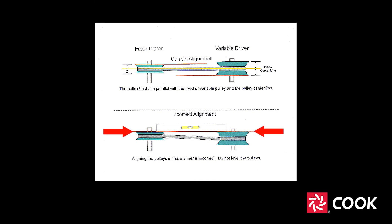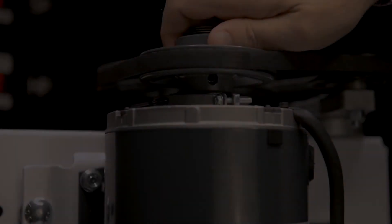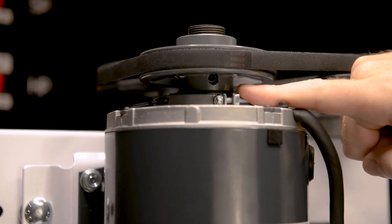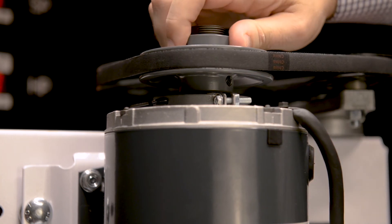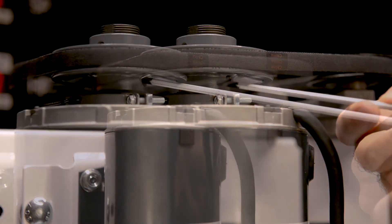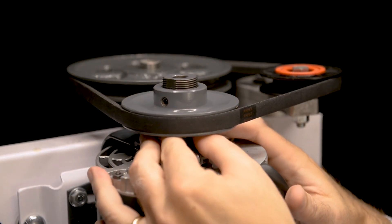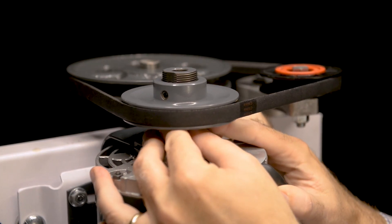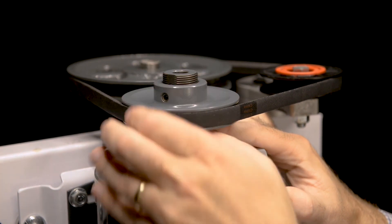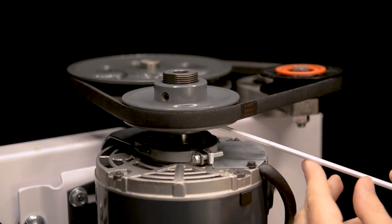To adjust the motor pulley for proper alignment, locate the set screws on the bottom side of the pulley. Some pulleys will only have one set screw while others will have two set screws. Loosen but do not remove the set screws. Raise or lower the pulley to achieve the proper belt alignment, visually checking that the centers of the pulleys are in alignment. Tighten the set screw per manufacturer's guidelines.